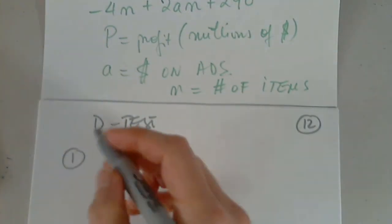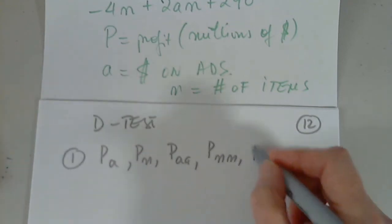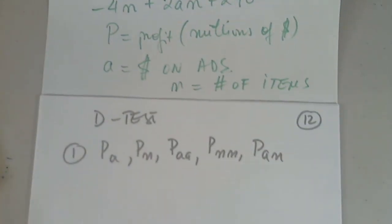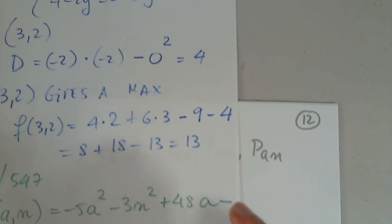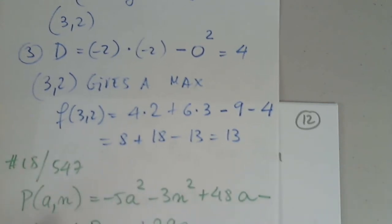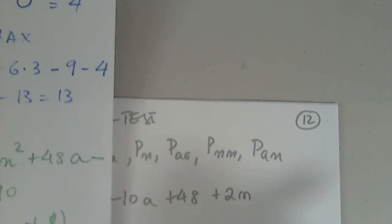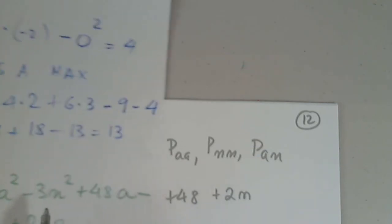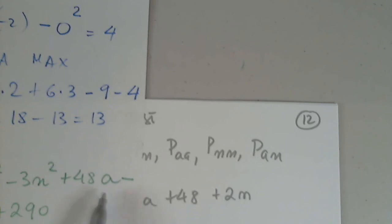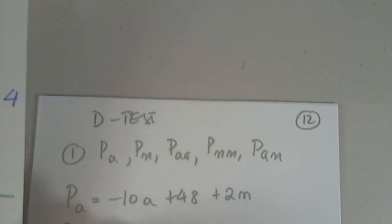So like before, it's a function with two variables. I have to conduct the d test. In order to conduct the d test, I have to find Pa, Pn, Paa, Pnn, and Pan. Okay. So Pa. Differentiating with respect to a, n is fixed. Negative 10a. This is fixed. Goodbye. Plus 48. And there is another a here. So when I differentiate, I get plus 2n. So negative 10a. Plus this is fixed. I differentiate with respect to a. And this is negative 4n. So it goes away. And plus 2n. That's it.